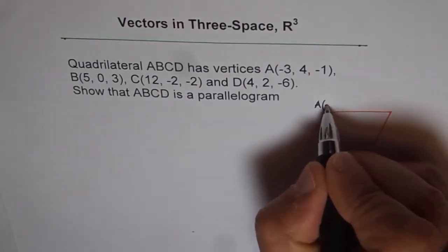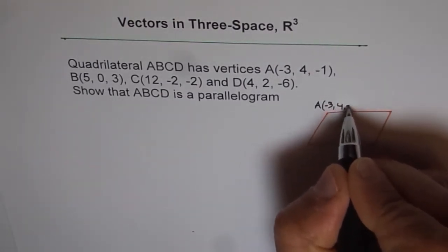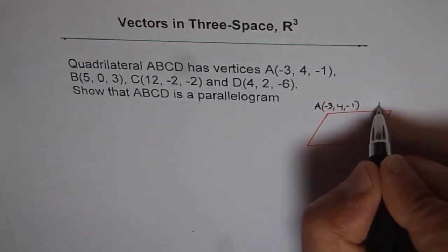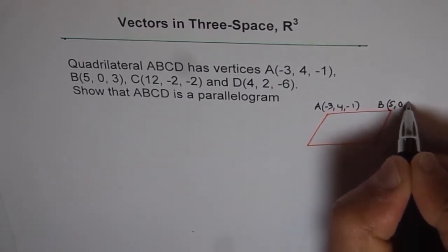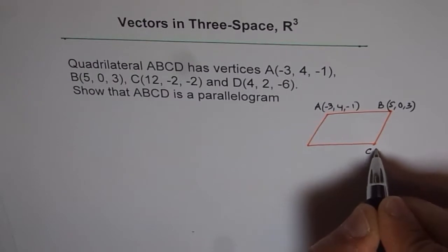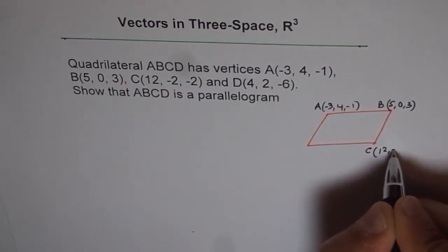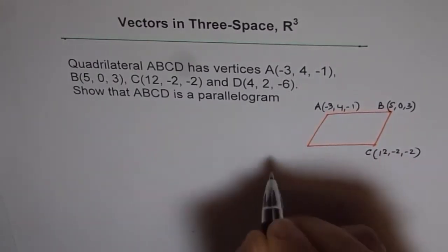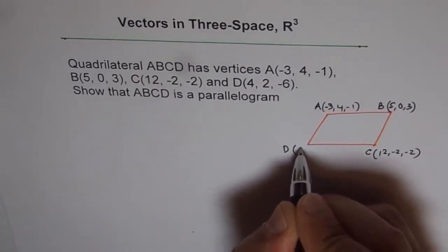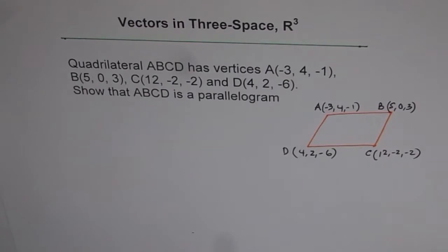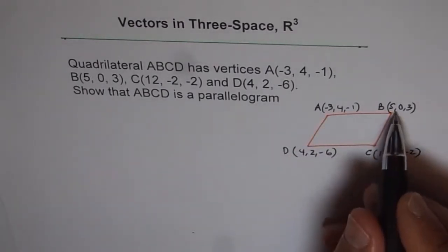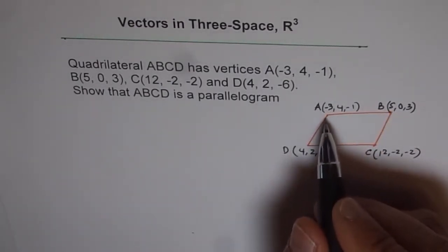A is (-3, 4, -1). And here we have B, which is (5, 0, 3). And then we have C, which is (12, -2, -2). And then D, which is (4, 2, -6). Now, these are the points.